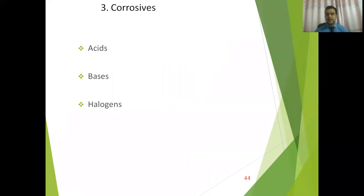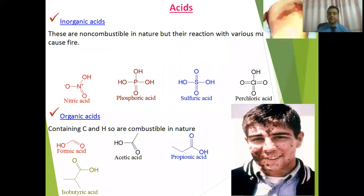Our discussion today will focus on acids. The basic definition of acids for chemists may be complicated, but when we discuss safety of acids, they are basically of two types: inorganic acids and organic acids. Inorganic acids are the acids which lack the carbon backbone. They are basically made up of inorganic compounds such as nitric acid, phosphoric acid, sulfuric acid, perchloric acid, and many more.